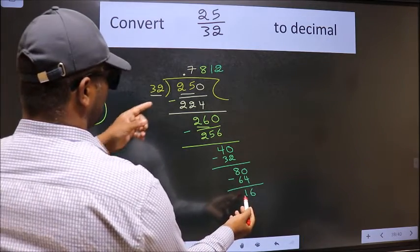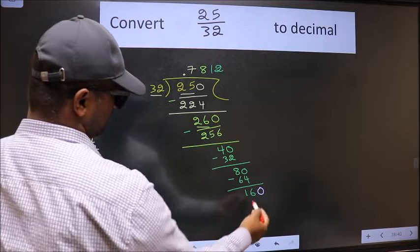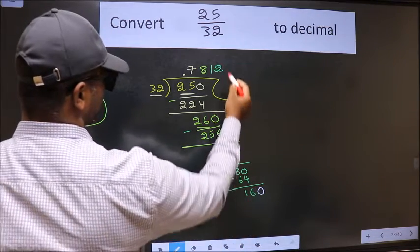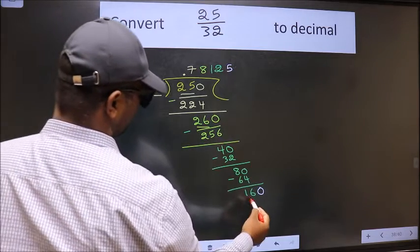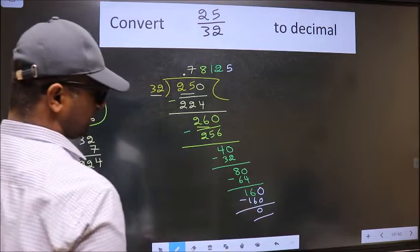16 smaller than 32, and we already have the decimal, so directly take 0. So 160. When do we get 160 in the 32 table? 32 times 5 is 160. Now we should subtract. We got 0.